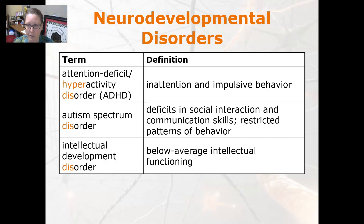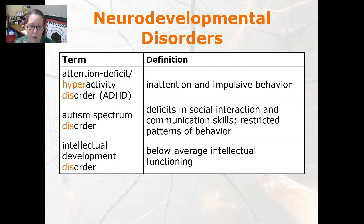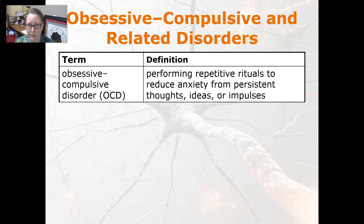Neurodevelopmental disorders: attention deficit hyperactivity disorder (ADHD) is inattention and impulsive behavior. Autism spectrum disorder is a deficit in social interaction and communication skills with restricted patterns of behavior. Intellectual development disorders involve below-average intellectual functioning. Obsessive-compulsive disorder (OCD) involves performing repetitive rituals to reduce anxiety from persistent thoughts, ideas, or impulses.